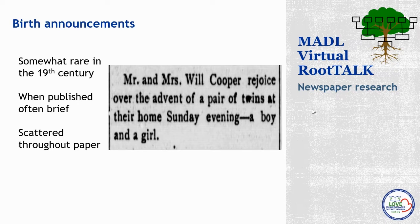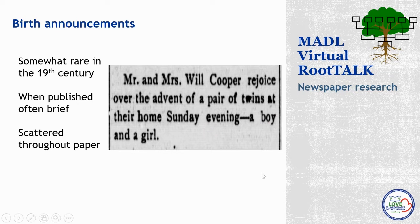Here's another example in a local news column from the Owasso Times, September 12th, 1884: Mr. and Mrs. Will Cooper rejoice over the advent of a pair of twins at their home Sunday, a boy and a girl. We know the family had twins, a boy and a girl, published in the Owasso Times on September 12th. We can find a historical calendar to see what the closest Sunday was to September 12th to get their birth date, and then do more detailed searching for a vital record. These early birth announcements don't give a ton of information, but what we do get gives us great clues to keep searching.